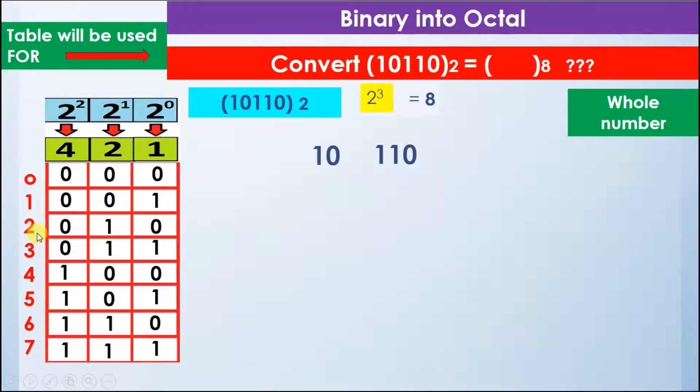In order to make groups of 3 bits, we will move away from the decimal point and keep making groups till the last digit.